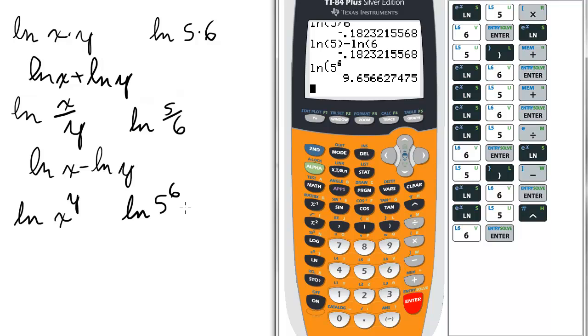You have an intuition that might be 6 ln of 5. So let's try that, 6 ln of 5, making the exponent a coefficient. And it works out.